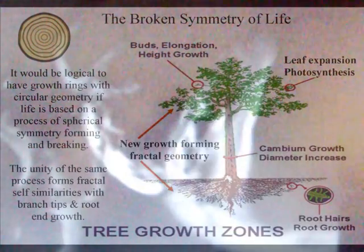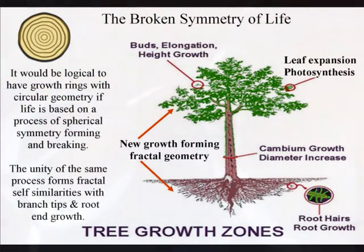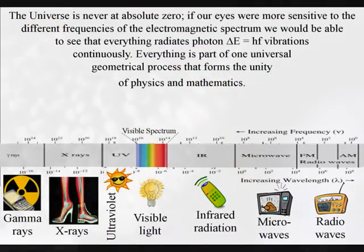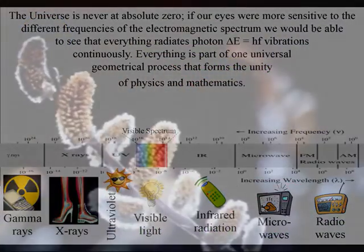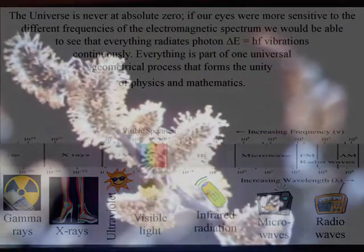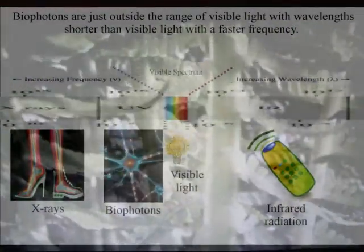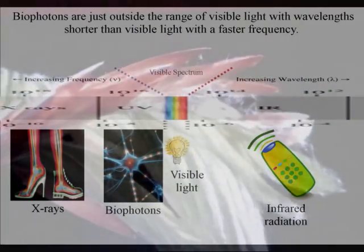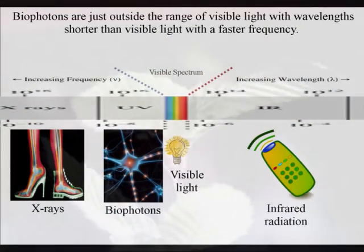Tree growth is mainly at the branch tips and root ends, where the new growth is in contact with the light of the electromagnetic spectrum in the form of sunlight, or the atoms of the periodic table in the form of soil. In both cases there will be an exchange of photon or bio-photon energy with the movement of charge.